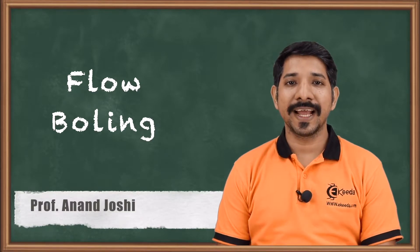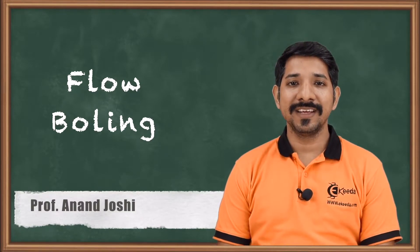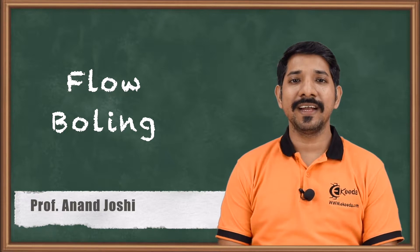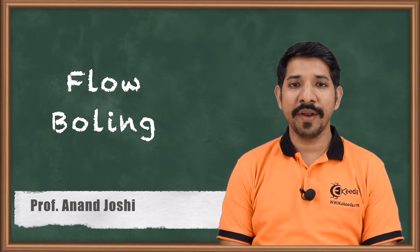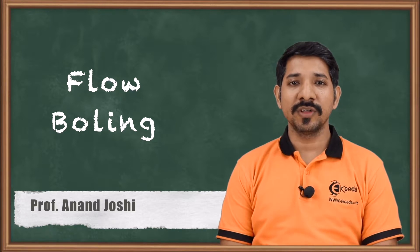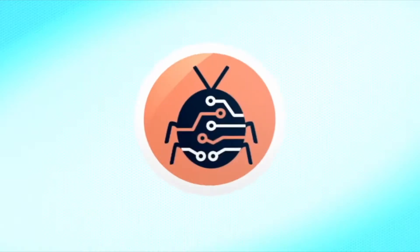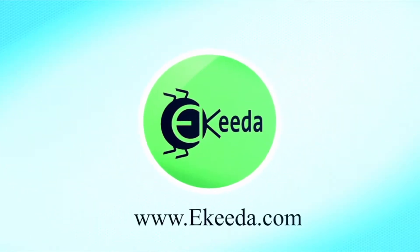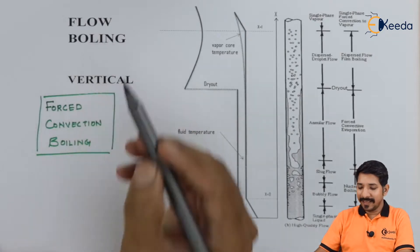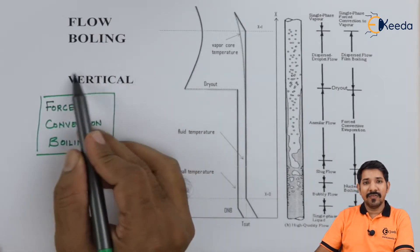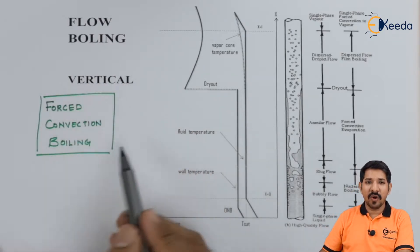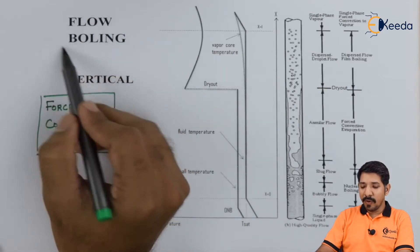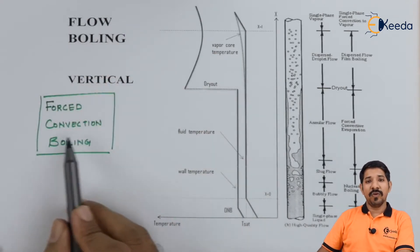We have seen the basic mechanism of boiling and various types of boiling. We have seen that two boilings are more important: pool boiling and flow boiling. In this topic we are going to talk about flow boiling. In flow boiling there can be a vertical or horizontal scenario. Flow boiling is also categorized as forced convection boiling.